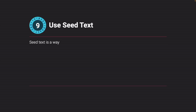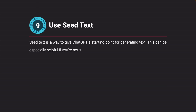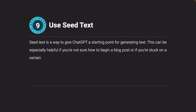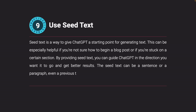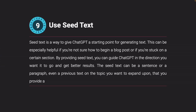Use seed text. Seed text is a way to give ChatGPT a starting point for generating text. This can be especially helpful if you're not sure how to begin a blog post or if you're stuck on a certain section. By providing seed text, you can guide ChatGPT in the direction you want it to go and get better results. The seed text can be a sentence, a paragraph, or even a previous text on the topic you want to expand upon, that you provide as the starting point for the model.